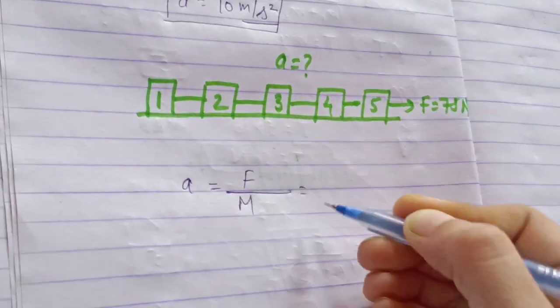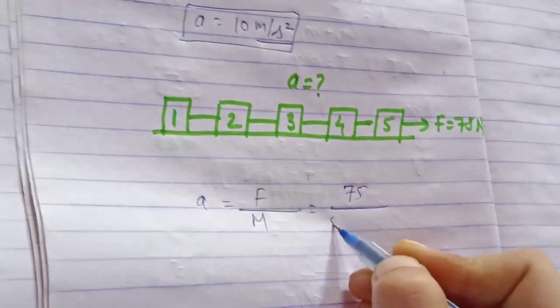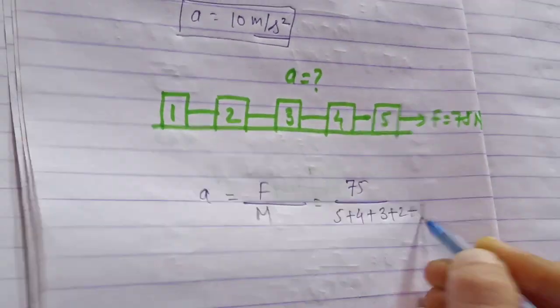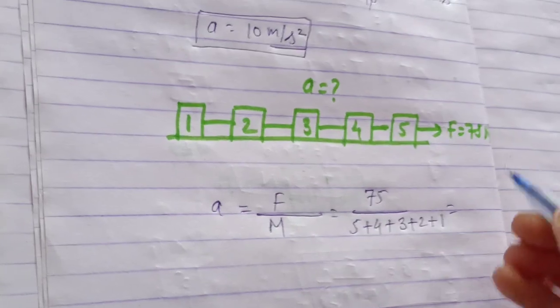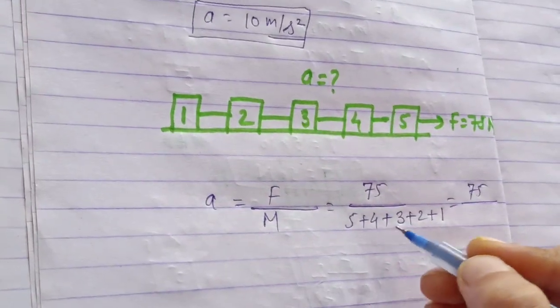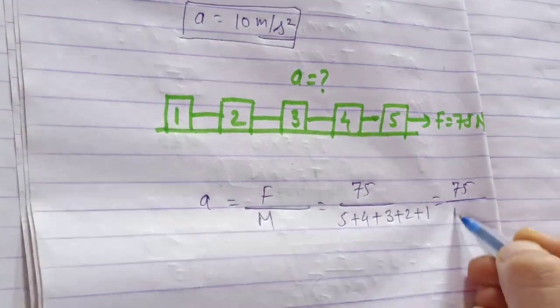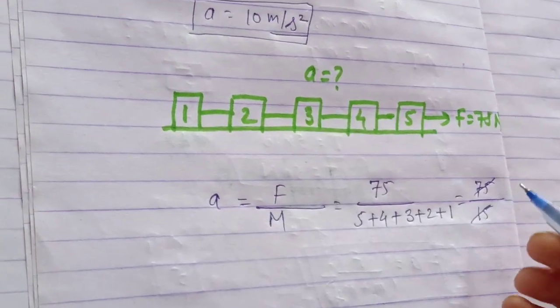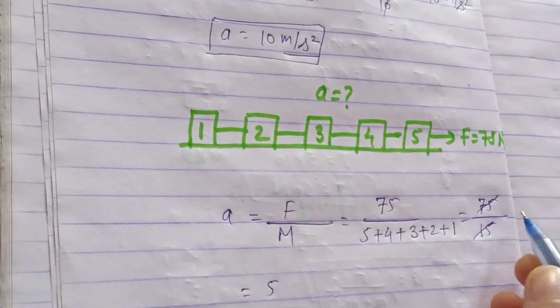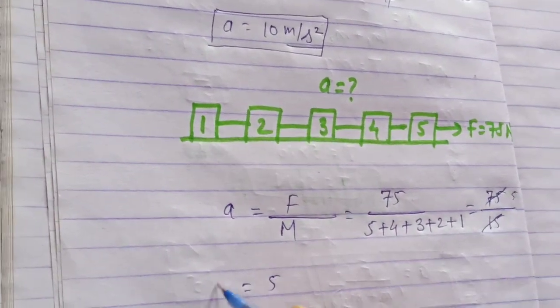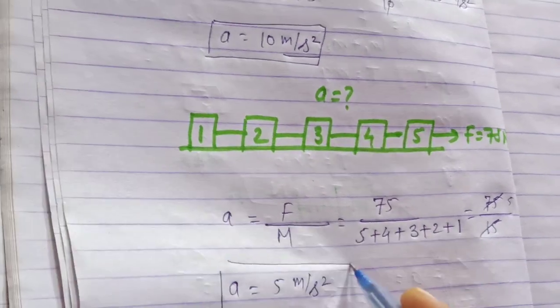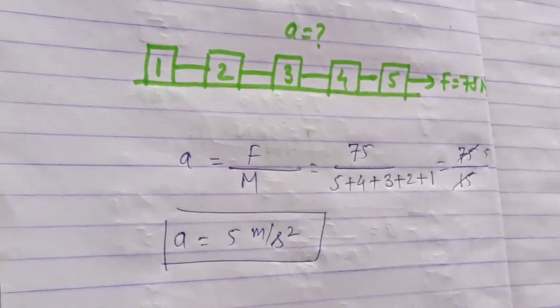That is 75 divided by (5 plus 4 plus 3 plus 2 plus 1) equals 75 divided by 15. Five times 15 is 75, so a equals 5 meters per second squared. I hope you all understand